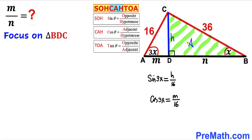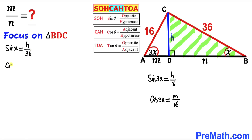Now let's focus on right triangle BDC and apply SOH-CAH-TOA again. Sine of x equals opposite over hypotenuse — our opposite is h and hypotenuse is 36, so sine of x equals h divided by 36. Cosine of x equals adjacent over hypotenuse — adjacent is n and hypotenuse is 36, so cosine of x equals n divided by 36.